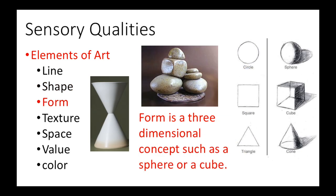Form is a three-dimensional concept, such as a sphere, a cube, or a cone. Most sculptures can be broken down into a series of simple forms. For example, a common vase can be considered a compound form comprised of a sphere, a cylinder, and a cone. A white vase might be made up of two geometric cones, while a rock sculpture makes use of organic forms.